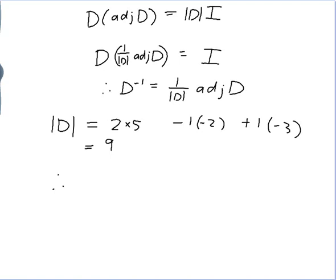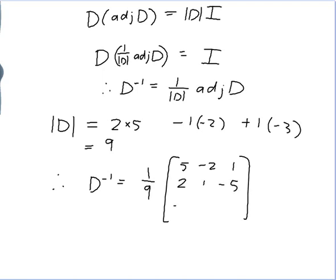So therefore D inverse is equal to 1 over 9 times the adjoint, which was the matrix: row 1: 5, −2, 1; row 2: 2, 1, −5; row 3: −3, 3, 3.